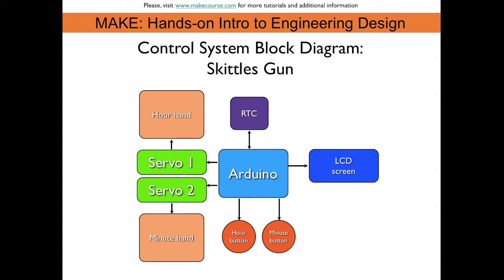The minute and hour buttons will update the RTC so it ensures the clock is always accurate. The LCD screen is just to give you a little bit of feedback on what the current time is when you're setting it. And the Arduino, you can see, controls the two servomotors, one for the hour and one for the minute.